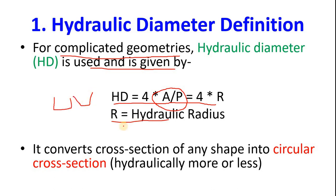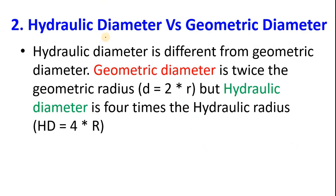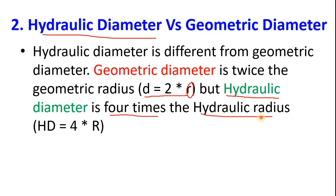Hydraulic diameter is different from geometric diameter. Geometric diameter is two times the geometric radius, but hydraulic diameter is four times the hydraulic radius. This is the key distinction between the two.